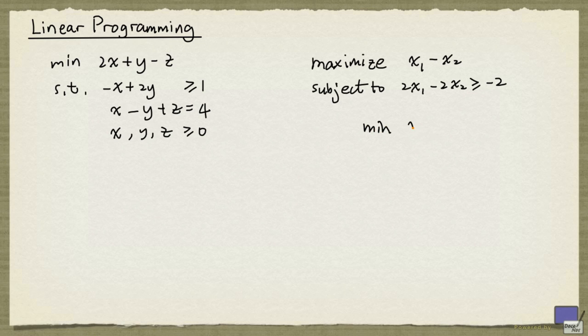And we can have an unbounded problem for minimization problems as well. For example, this minimization problem is unbounded. There's no lower bound that you can impose on x1 if the only constraint that you have is this.